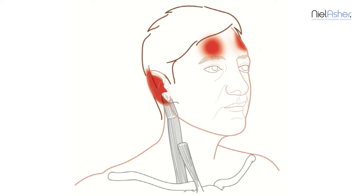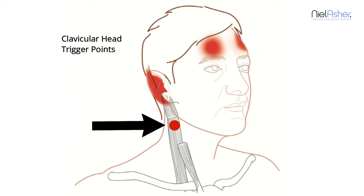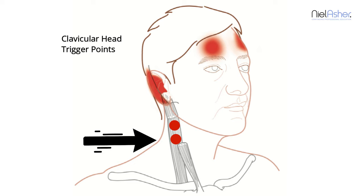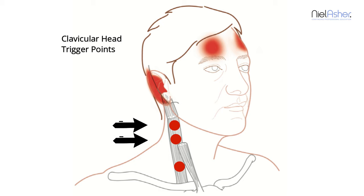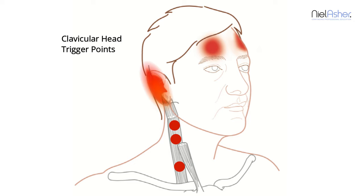Now we'll look at the trigger points found in the clavicular division — the deeper one. There are fewer, and the first is up high, the second is absolutely mid-zone, and the third is low down, quite close to where it attaches to the clavicle. The pain distribution here is quite different, and the commonest place you feel pain from these triggers is deep inside your ear.